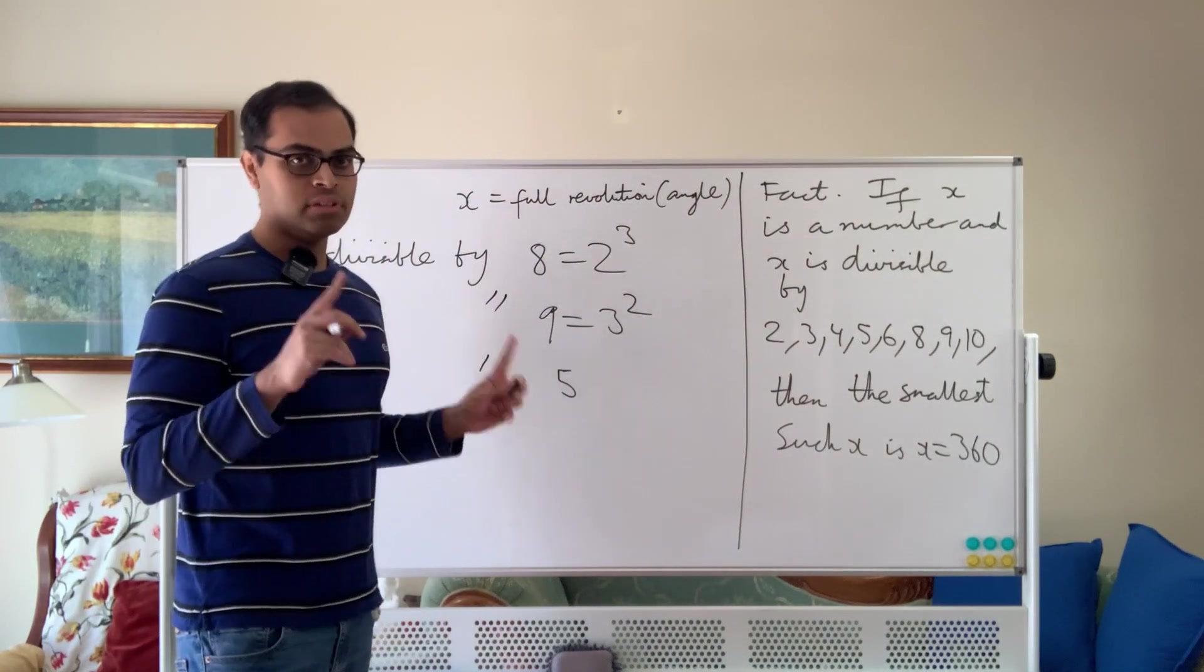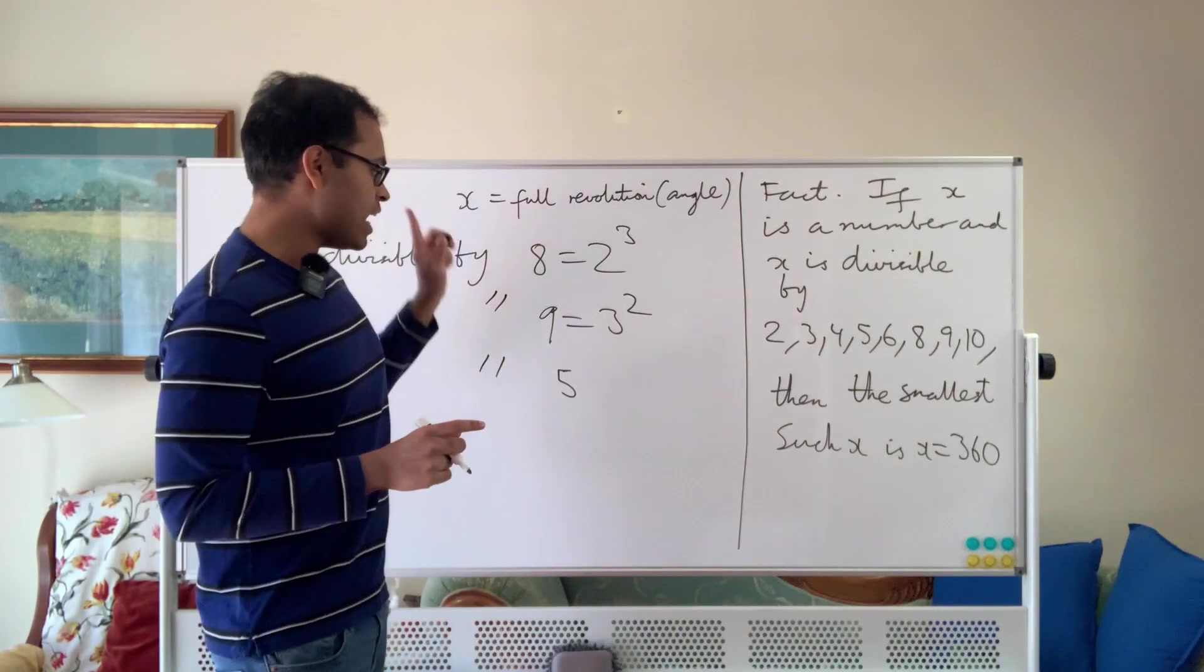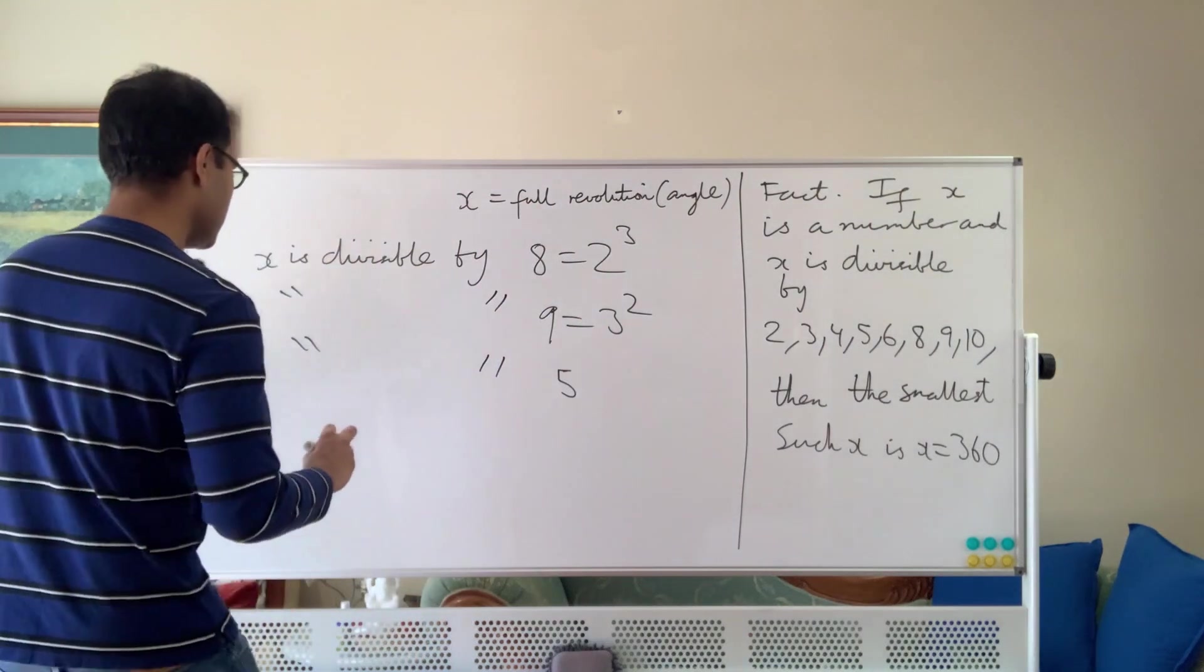So the only number that goes into all of these is 1, which means their least common multiple, the smallest number that is divisible by 8, 9, and 5 is going to be, so therefore.